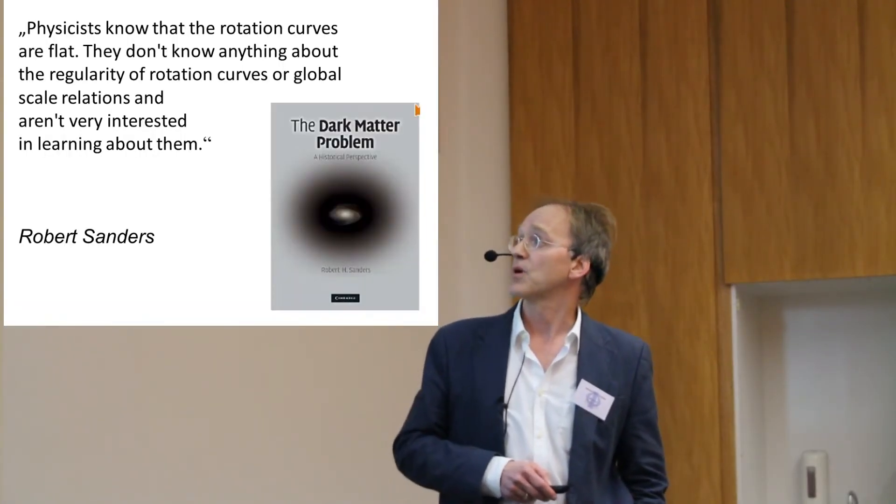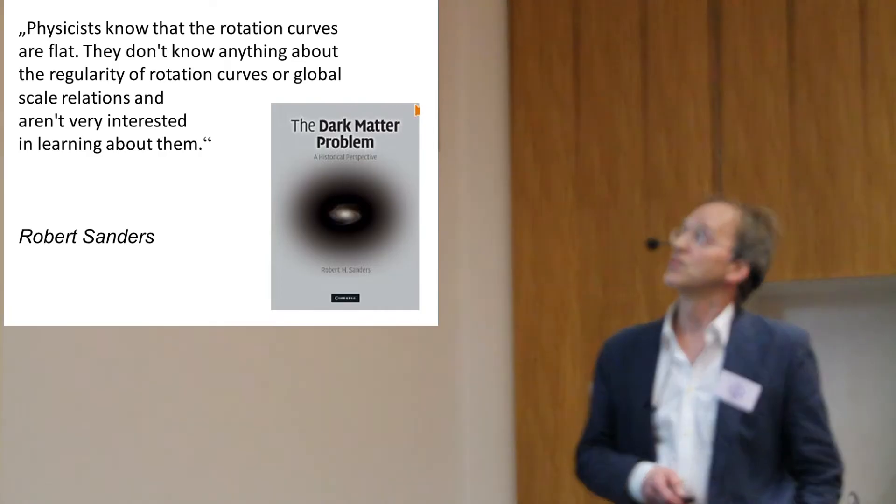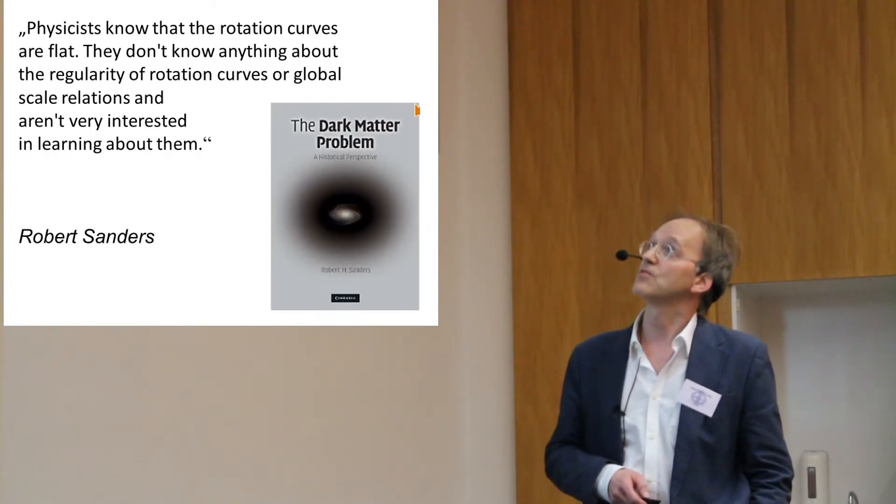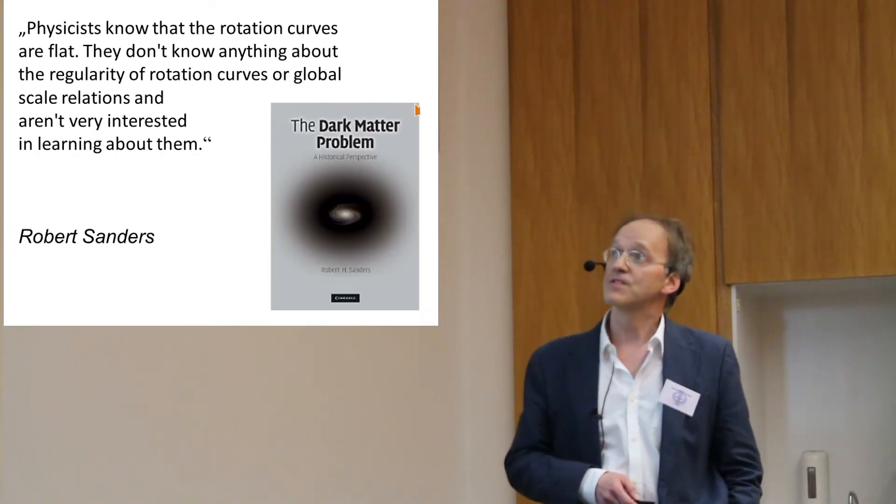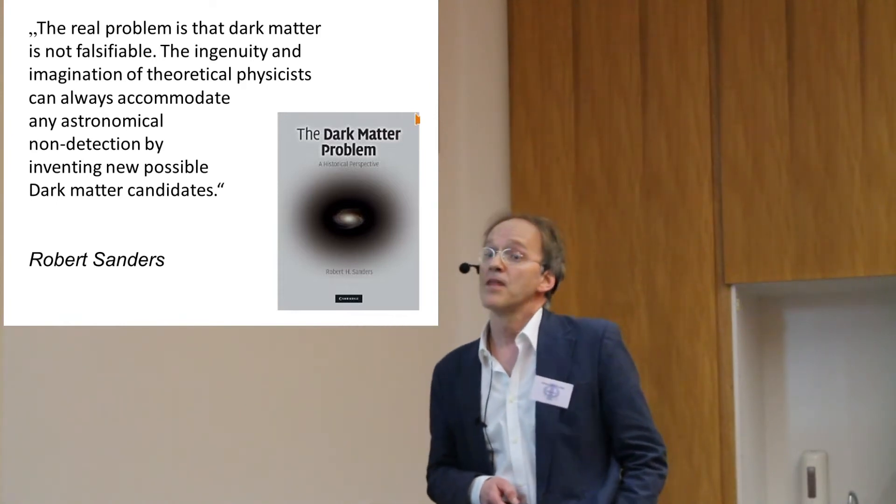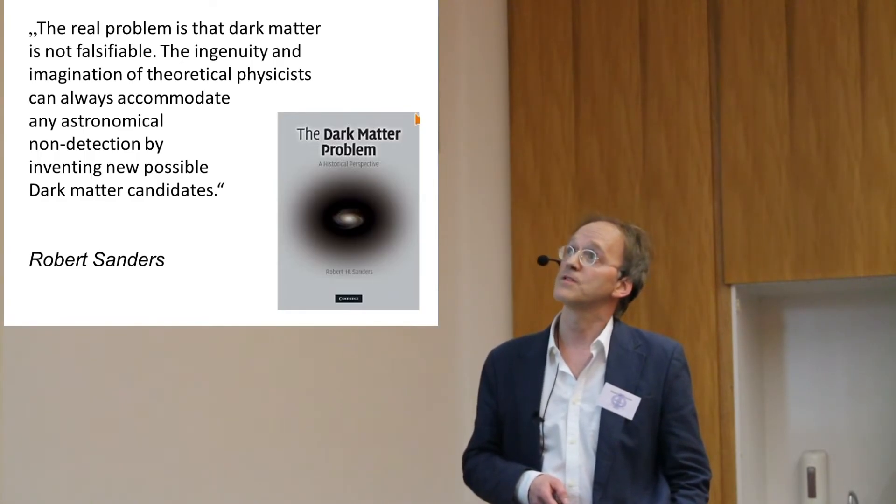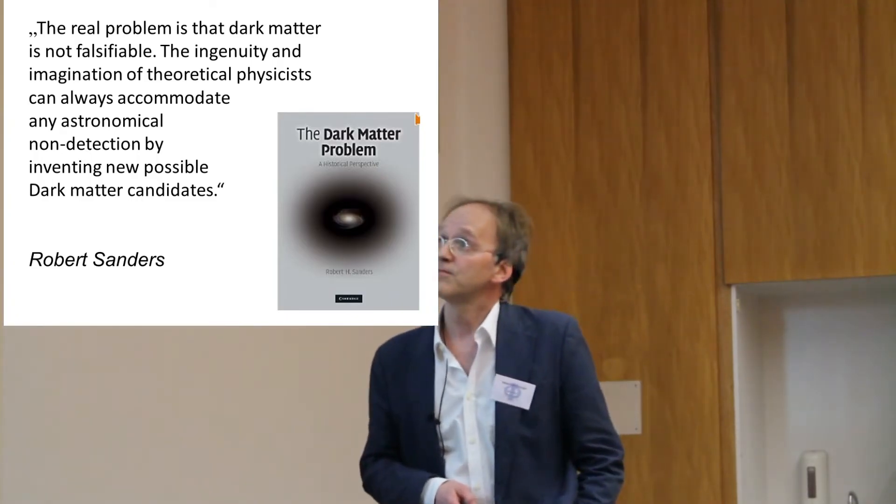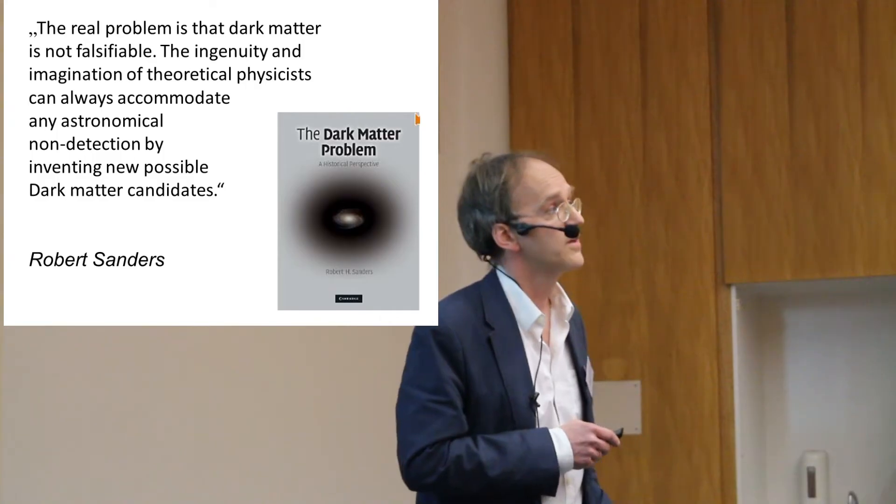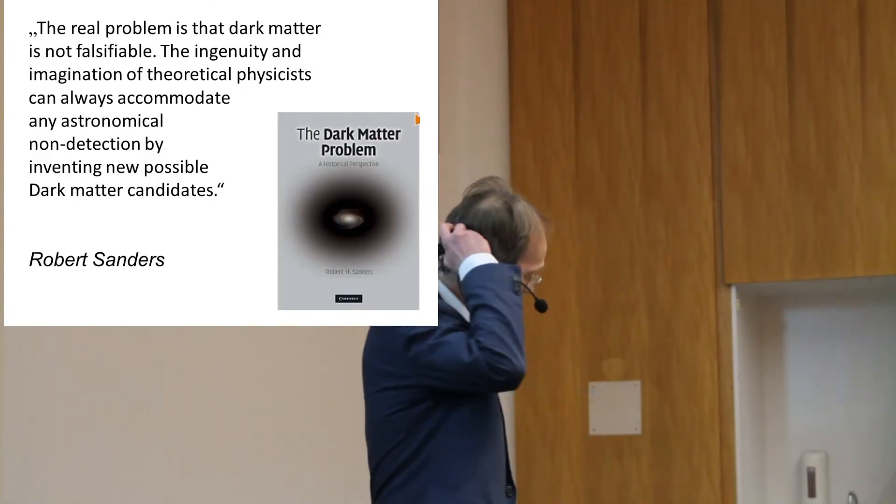And as a sideline, there is no astrophysical evidence for supersymmetric particles whatsoever. A very good book about the dark matter problem by Robert Saunders, a Dutch astronomer, is saying that physicists don't know that the rotation curves are flat of galaxies. They don't know anything about the regularity of rotation curves or global scale relations and aren't very interested in learning about them. And he also says the real problem is that dark matter is not falsifiable. The ingenuity and imagination of theoretical physicists can always accommodate any astronomical non-detection by inventing new possible dark matter candidates. And I think here we come to the point where the idea of supersymmetry is even worse than the standard model because it squeezes out of falsifiability.